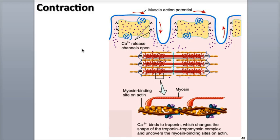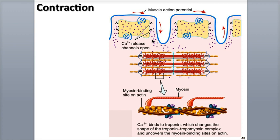Muscle contraction begins when the concentration of calcium ions in the sarcoplasm increases, and ends when the calcium concentration decreases. Relaxed muscle fibers have a very low concentration of calcium ions in their sarcoplasm, with most of it stored and isolated inside the SR. In excitation-contraction coupling, the muscle action potential moves across the sarcolemma and down the T-tubules. This is called propagation and is the excitation part. The calcium ion release channels in the SR membrane open, allowing calcium ions to flood into the sarcoplasm.